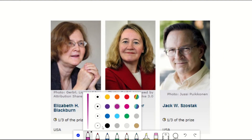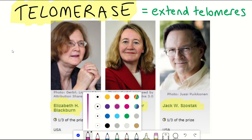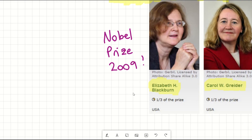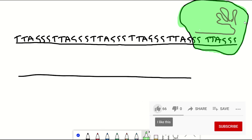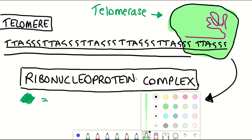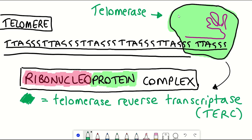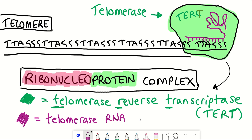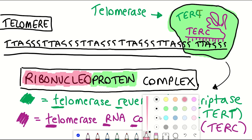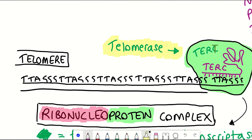Interestingly, work conducted by Elizabeth Blackburn, Carol Greider, and Jack Szostak discovered the enzyme telomerase, which can actually extend telomeres and prevent them from shortening over time. This work led to them being awarded the Nobel Prize in Physiology or Medicine in 2009. Telomerase is a ribonucleoprotein complex, meaning it has both a protein component and an RNA component. The protein component with enzymatic activity to synthesise telomeric repeats is known as telomerase reverse transcriptase, or TERT.